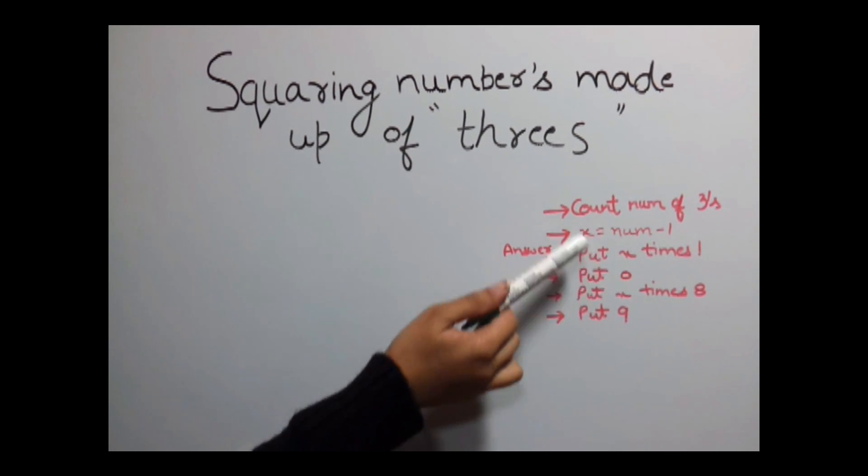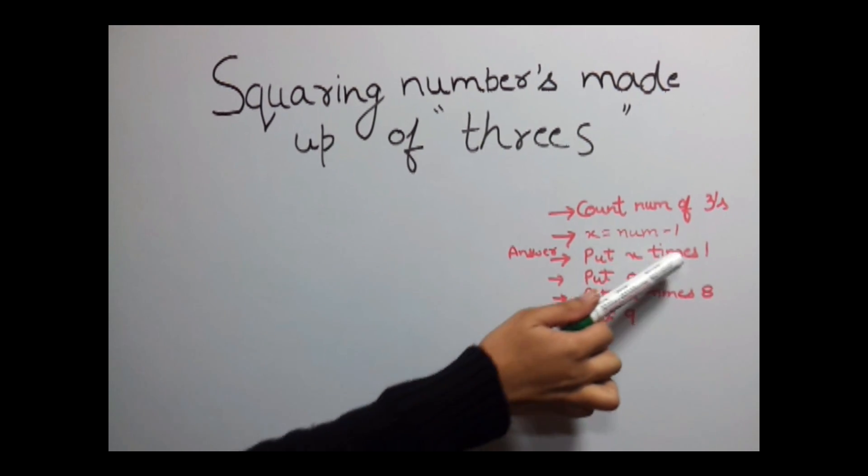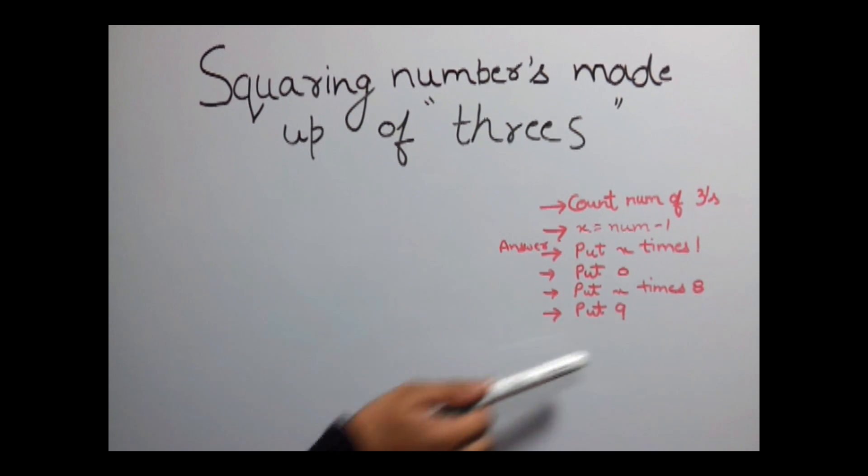Put the value of x with the number of 3 minus 1 and then your answer would be x times 1 and put a 0, put x times 8 and then put a 9.